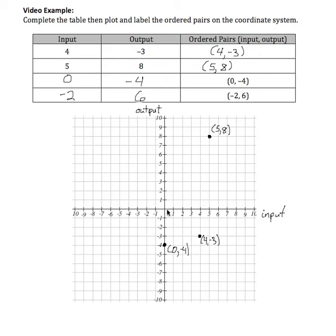For (5, 8): 5 positive in the horizontal, up to 8 positive in the vertical — label (5, 8). Then (-2, 6): travel negative 2 in the horizontal direction and then positive 6 in the vertical — plot and label (-2, 6). I'm also going to identify what are called the quadrants.